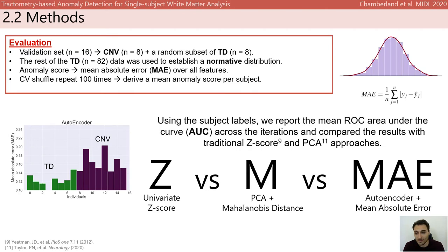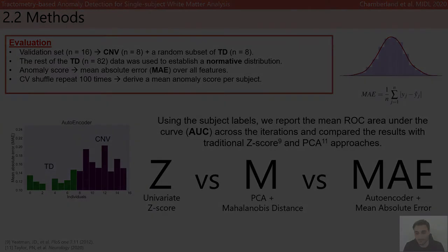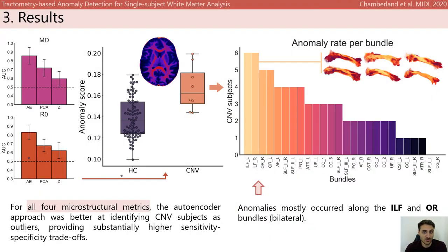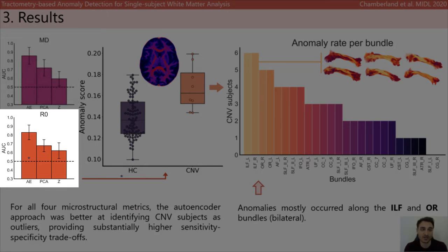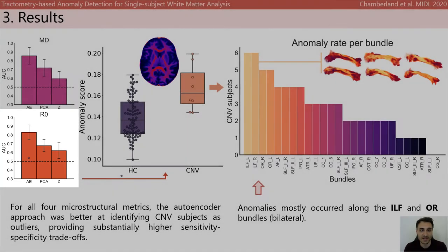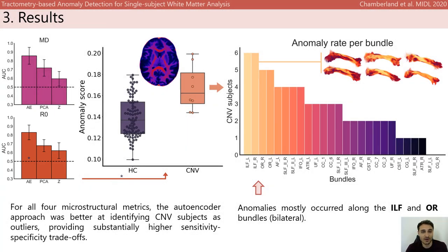We then compared our implementation with the traditional Z-score approach, as well as with a multivariate PCA approach combined with the Mahalanobis distance. For all four microstructural metrics, the autoencoder approach was better at identifying CNV subjects as outliers, providing higher sensitivity-specificity tradeoffs. In particular, the RISH-0 feature showed a higher discriminating power with an area under the curve of 0.86 compared with the mean univariate Z-score and the multivariate PCA approach. This could potentially be explained by the framework's ability to handle high-dimensional data non-linearly.